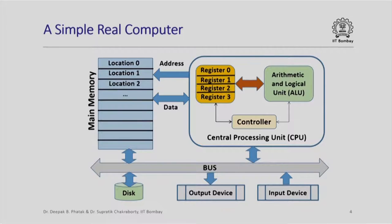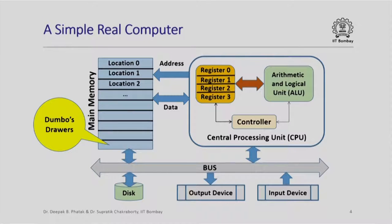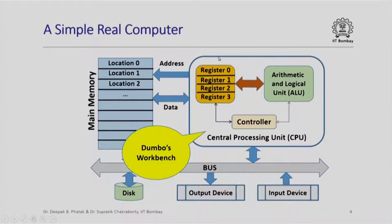Here is a very high level block diagram of a simple real computer. I am going to explain each of these color coded parts in more detail. There is something labeled as main memory, with locations 0, 1, 2, and so on. These are like Dumbo's drawers — Dumbo needed named drawers to store and retrieve information. So this main memory in a real computer is much like Dumbo's drawers.